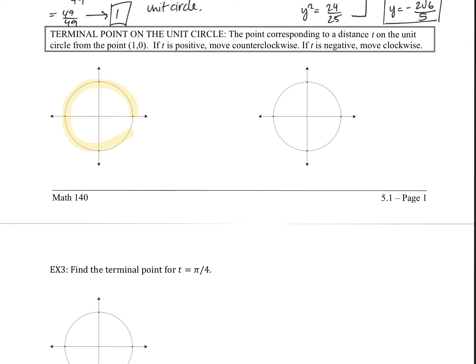If t is positive, starting from (1, 0), we're going to move counterclockwise — which looks like we start here and move in that direction. If t is negative, we're going to move clockwise from our starting point. We always start at (1, 0), so the direction we travel depends on whether we're given a positive or negative t.